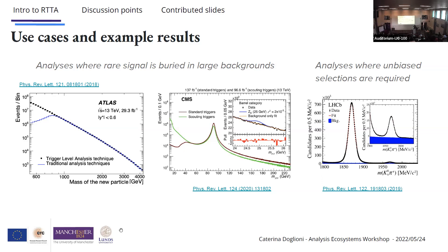Looking at a plot from Atlas with the number of events per bin on the y-axis (note the log scale) and particle mass on the x-axis: with traditional analysis techniques, we need to prescale the trigger — throw out a random fraction of events — so we're not able to probe particles with masses below one TeV. With scouting triggers (green line) versus standard analysis (red line), we can actually discover signals that are really tiny. There are also statistics issues, and a need for unbiased selections when you have enough statistics.